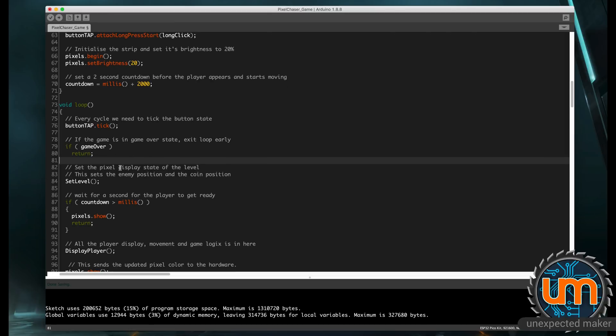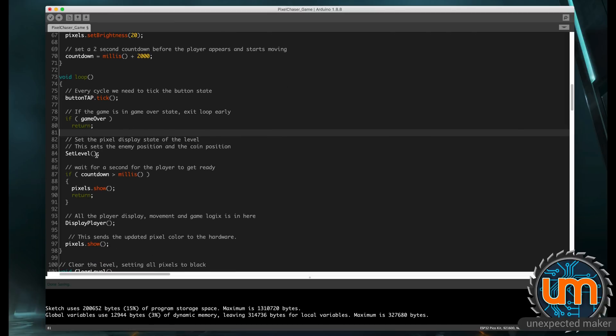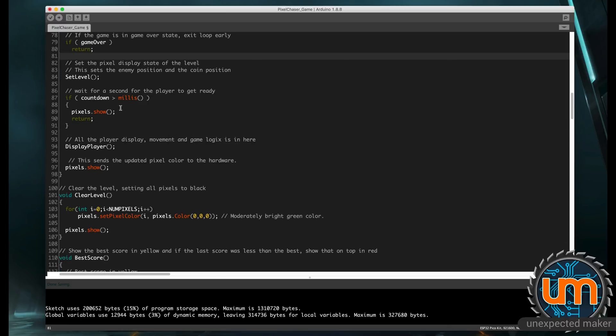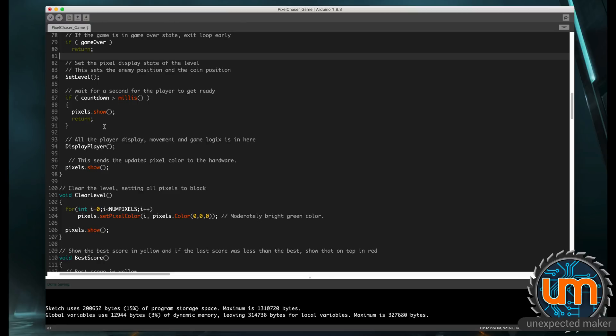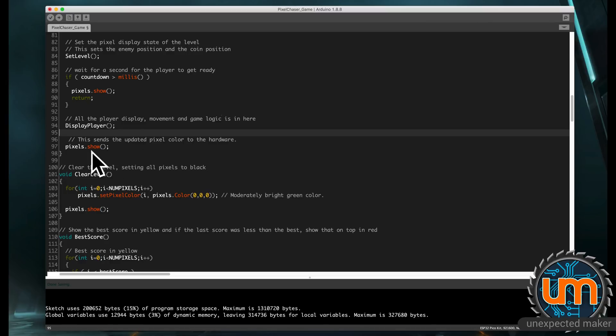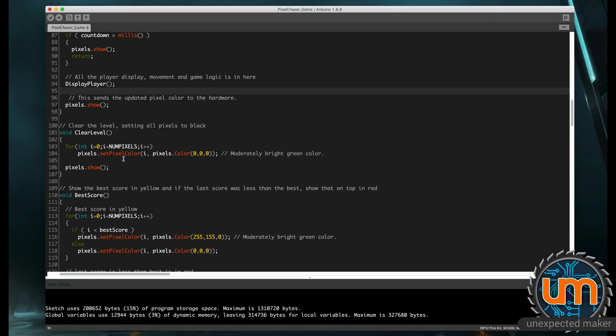The loop's pretty simple. We just tick the button every cycle. If there's a game over state, don't do anything else. Otherwise we call set level every frame, which we'll have a look at in a moment. There's a two second pause at the start, so the player doesn't start moving straight away. Display player basically does the whole game logic in here, and at the end we show the pixels.